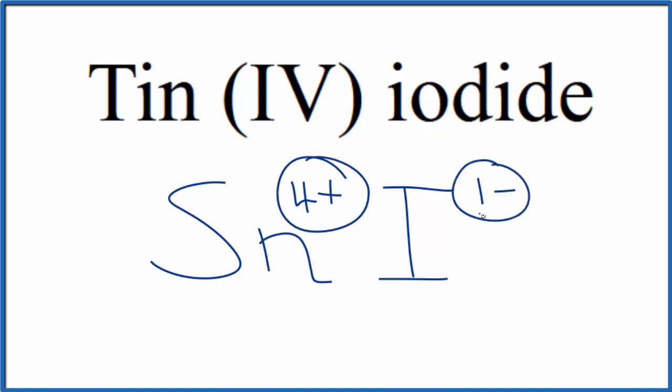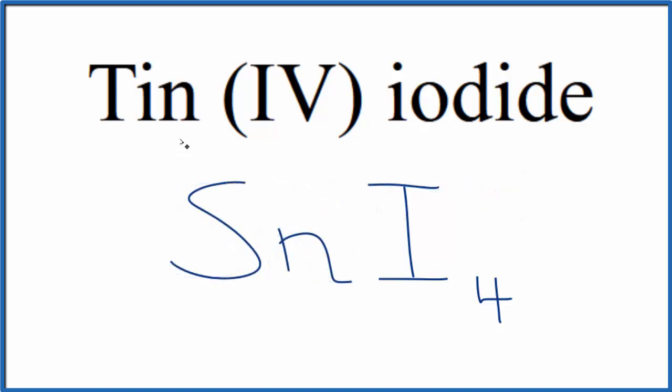We could do that if we had four of these iodide ions. Four times 1- equals 4-, which would balance out the 4+. So this is the formula for tin four iodide: SnI4.